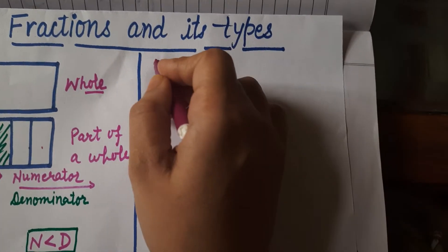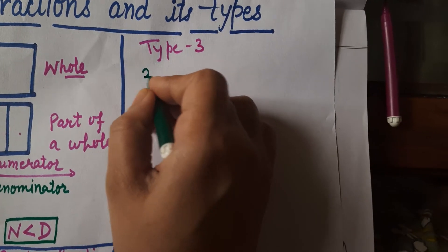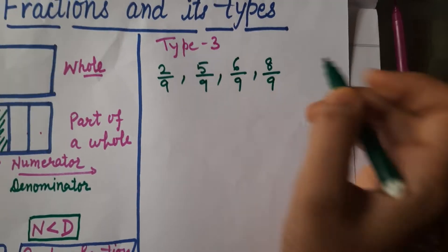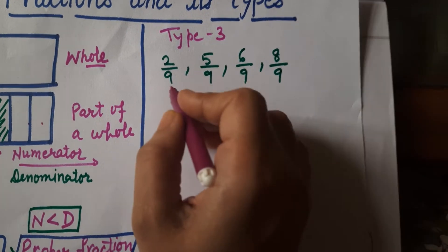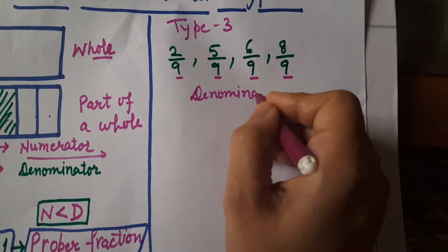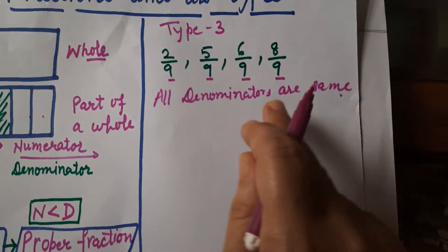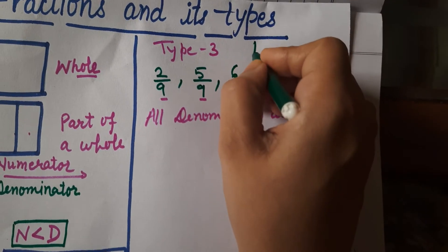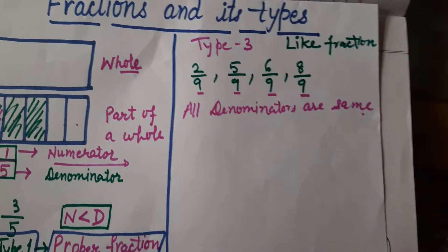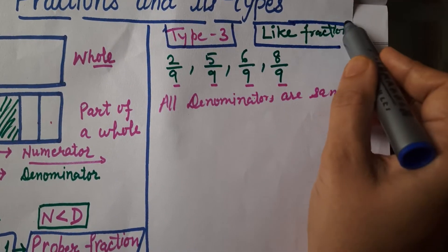Let's discuss type three. Have you seen fractions like these: two by nine, five by nine, six by nine, eight by nine? The one thing that is similar in these fractions is that their denominators are equal — all the denominators are the same. When all denominators are the same in a set of fractions, that type is known as like fractions.